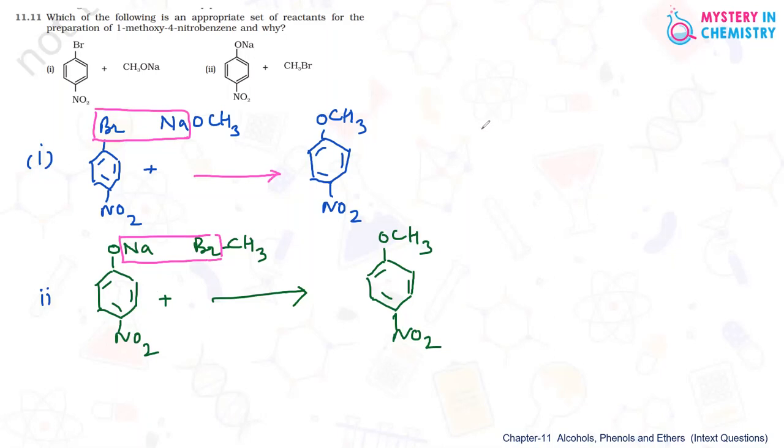This is very important point that we have to follow: for this Williamson synthesis, we need one alkyl halide and one alkoxide ion. Out of these two reagents, the alkyl halide should be primary. Then only the mechanism can take place easily because the reaction is by SN2 mechanism and there should not be any steric hindrance. So for that we need primary alkyl halide, and primary alkyl halide is present here in the second case. This is the preferred one.